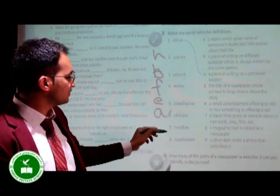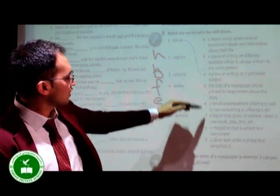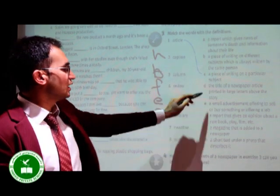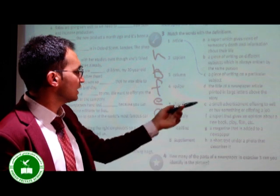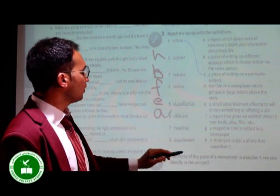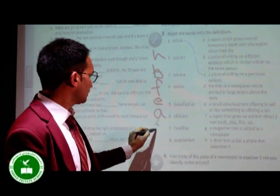And the next one is headline. As you know, headline means what? Which one? Which one is left? Yes, letter D. The title of a newspaper article printed in large letters above the story.